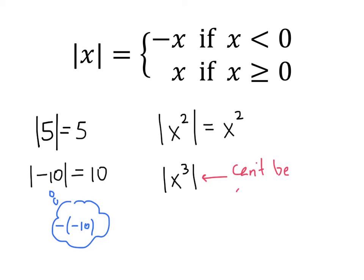So especially when we have variables inside of our absolute values, sometimes we can simplify, and sometimes we can't. But when we have an actual number inside the absolute values, we can always know exactly what's going to happen. If the number inside is greater than or equal to 0, then nothing will happen. And if the number inside is negative, then the negative sign goes away.